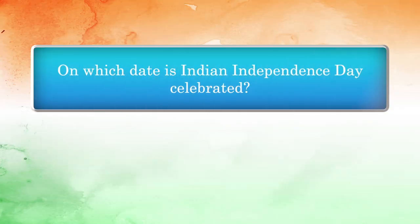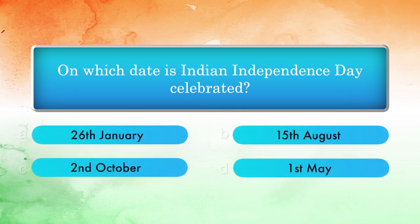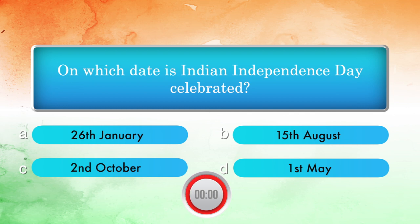On which date is Indian Independence Day celebrated? Options: 26th January, 15th August, 2nd October, 1st May. Answer: 15th August.